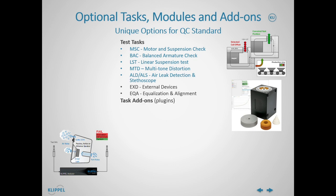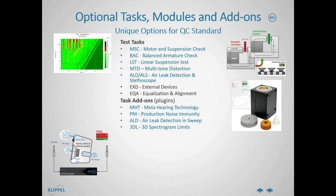Then we have some so-called add-ons, or plugins, for extending the capabilities of the standard test tasks. We have the MHC, the Meter Hearing Technology, dedicated to defect detection beyond human hearing — it is an add-on for the SPL task. The PNI, Production Noise Immunity, extends the noise detection feature of QC Standard to cope with noisy environments, and also applies to the SPL task. The ALD and Sweep integrates air leak detection technology into the JRP measurement of the SPL task. The 3DL is an extension for the SPL task offering powerful intuitive defect testing based on auditory time-frequency spectrogram. The DCX is a Dynamic Excursion Check and Control — it can measure AC and DC displacement with the laser sensor during the JRP measurement.